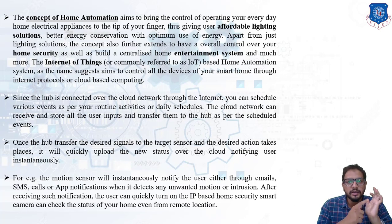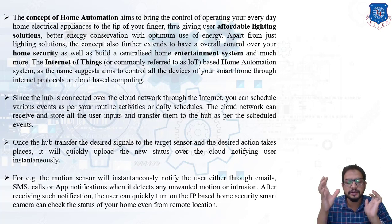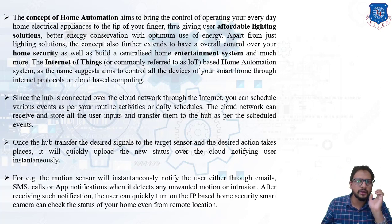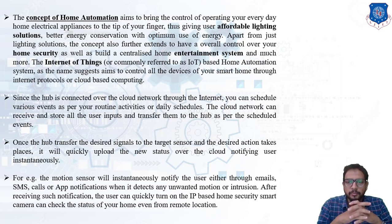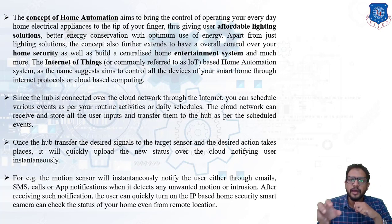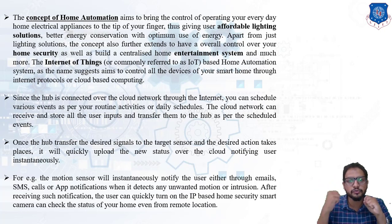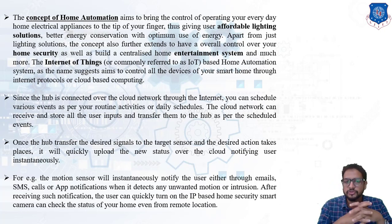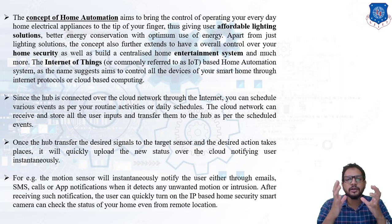As soon as we give a command, it is sent directly to the centralized control system — that is cloud computing. The cloud then gives that command to the hub, which is the system installed in our home. That system controls and actuates the sensors to switch on the washing machine. This is how the system operates.